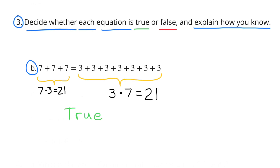B: 7 plus 7 plus 7 equals 3 plus 3 plus 3 plus 3 plus 3 plus 3 plus 3. That can be broken down as 7 times 3 equals 21, and 3 times 7 equals 21. So this equation is also true.